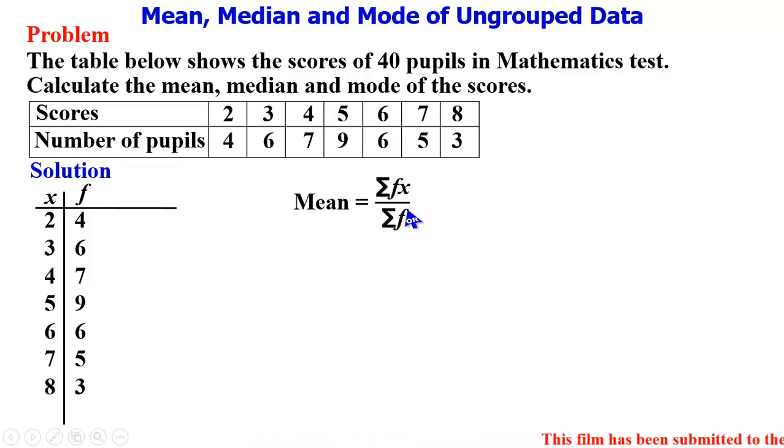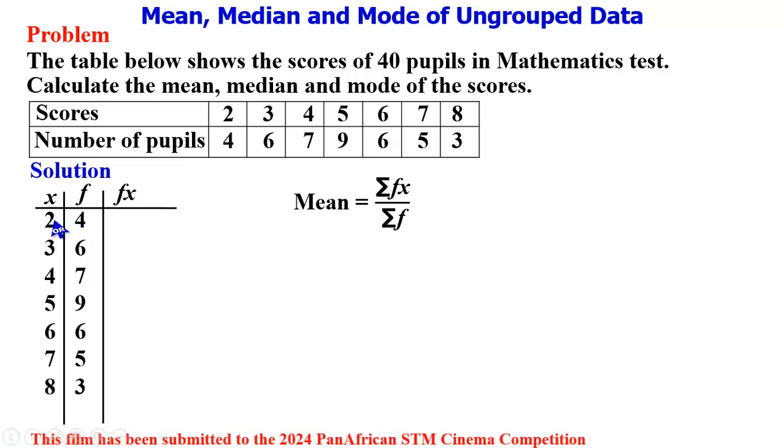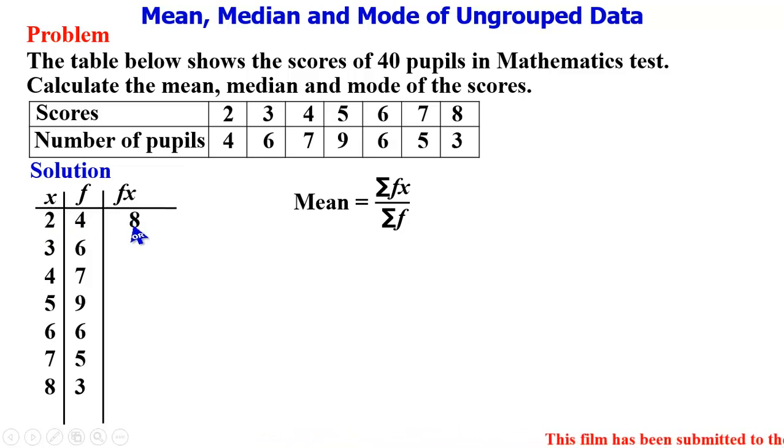We need an additional column for that, and we call it fx, which means the frequency multiplied by the scores. So 2 times 4 gives 8, 3 times 6 gives 18.